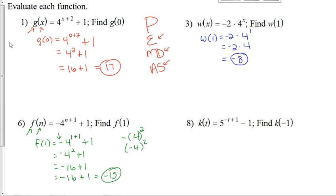Again, if it was this, we would do negative 4 squared. That's positive 16. 16 plus 1 would have given you 17, but not so in this case.